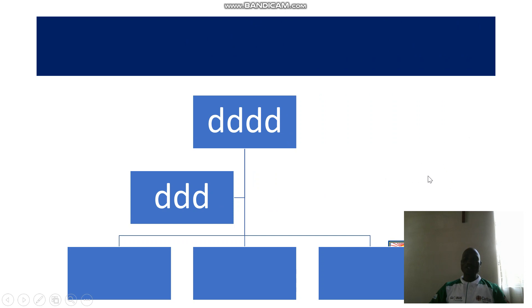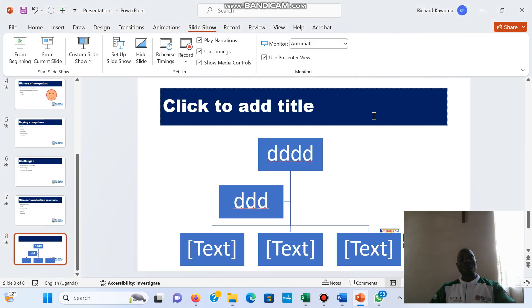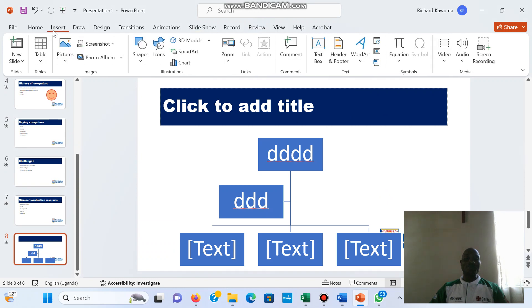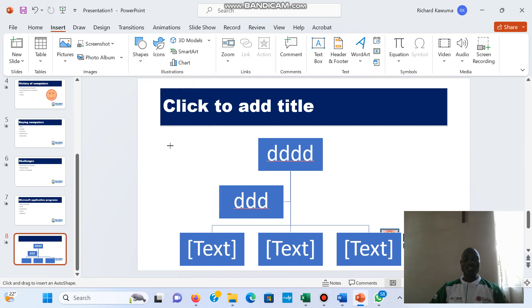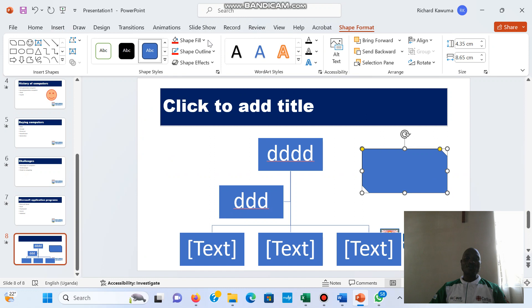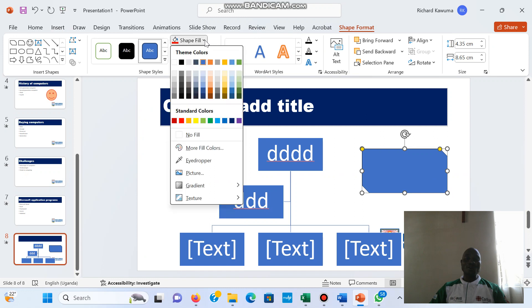Now I'm going to put another button that will take me back to the first slide. On the last slide, I'll create another button — I can use any shape I want. I'll select a shape and format it however I like.